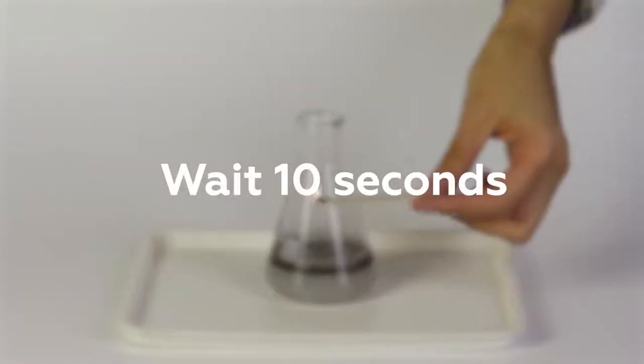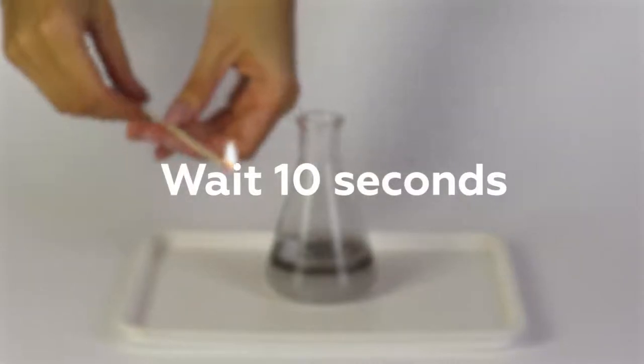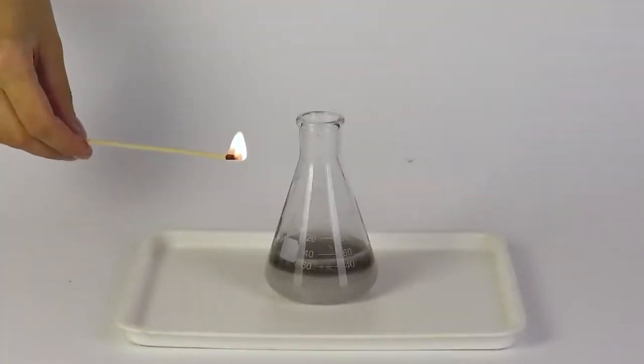Now take the gloves off and ignite the splint. Let it burn for 10 seconds and then blow it out. The splint will be smoldering.